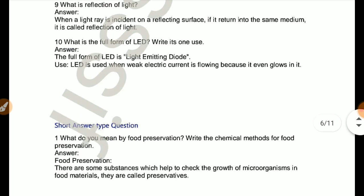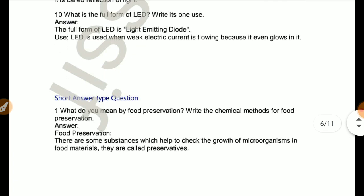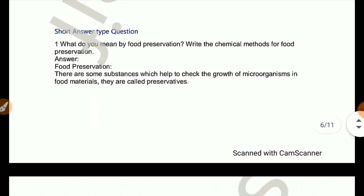What is the full form of LED? The full form of LED is Light Emitting Diode. LED is used when weak electric current is flowing because it gives glow in it.